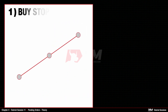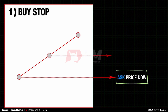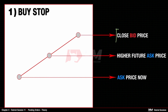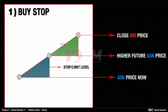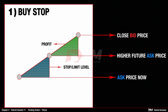Let's start with the graph representation of the Buy Stop order type. Buy orders are opened at the Ask price and closed at the Bid price. The Buy Stop order needs to be opened at a higher future Ask price. To make a profit on this type of order, the Closing Bid price needs to be higher than the opening Ask price.